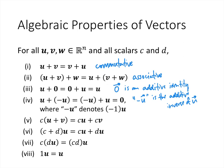For number five, we have c times (u plus v), being cu plus cv. And number six, we have (c plus d) times u, where c and d are scalars, equaling cu plus du. These are both distributive properties.